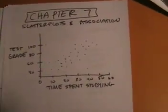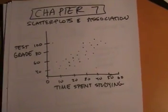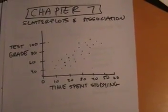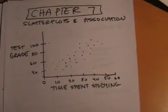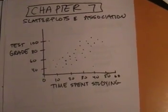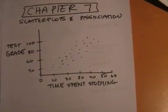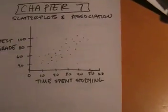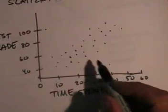Later on, we're going to do something called linear regression. We're going to fit a line to this data, and that line is going to be a model. We're going to use that model to say some stuff and make some predictions. We also look for outliers, like these points.